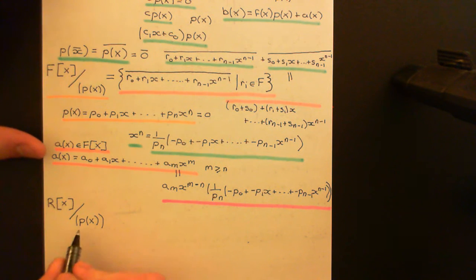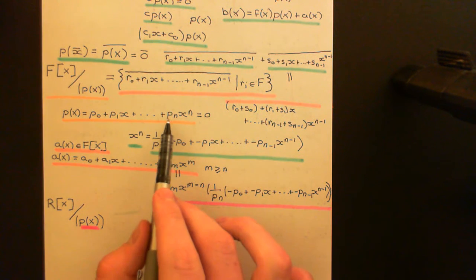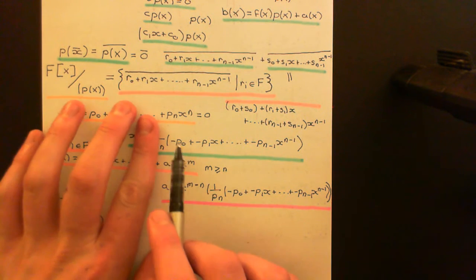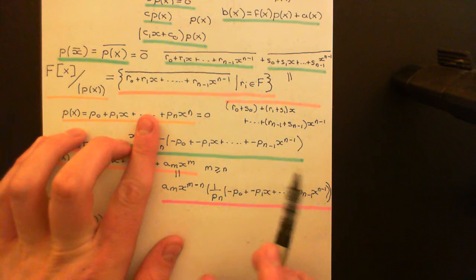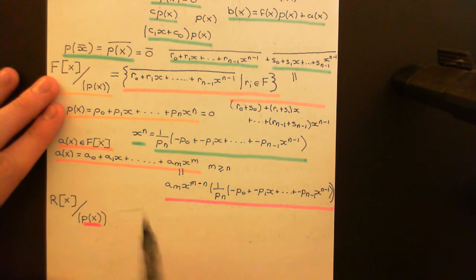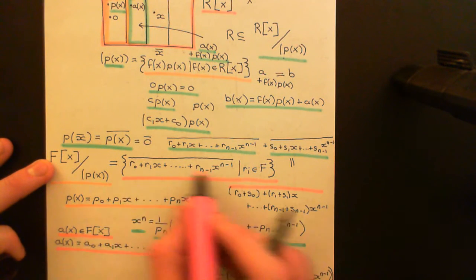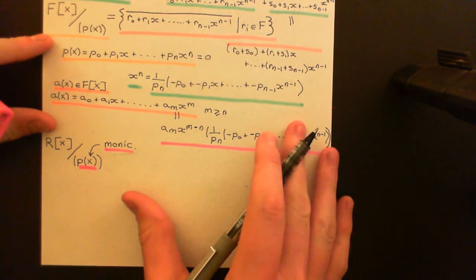Everything works beautifully if you work with a monic polynomial — where the leading coefficient is equal to 1. Then we never need to invert Pₙ: we can simply say X to the N equals the additive inverse of (P₀ + P₁X + ⋯ + Pₙ₋₁ Xⁿ⁻¹), and the entire argument goes through exactly as it did with fields. The cosets are all represented by polynomials with coefficients in the initial ring, of degree less than N.